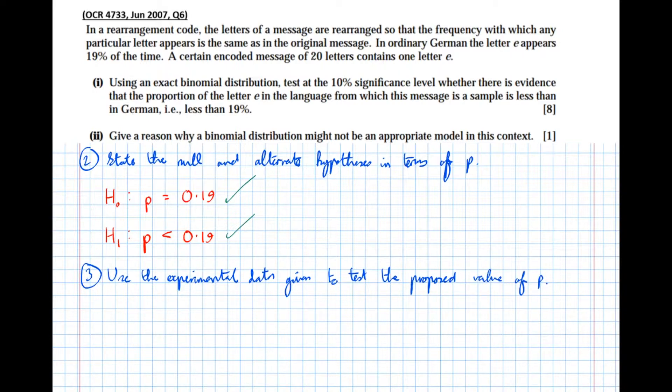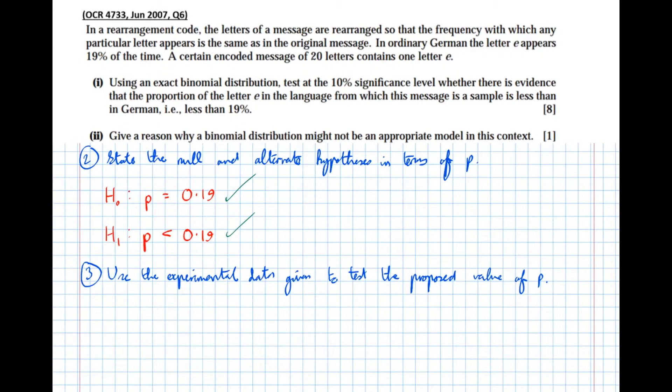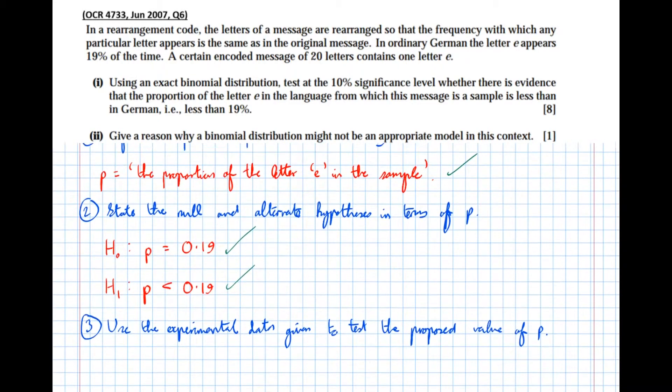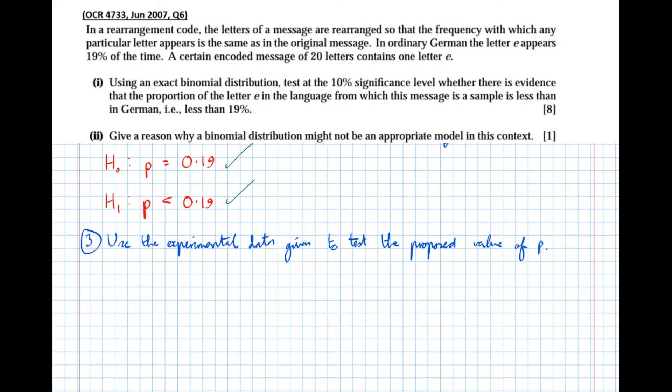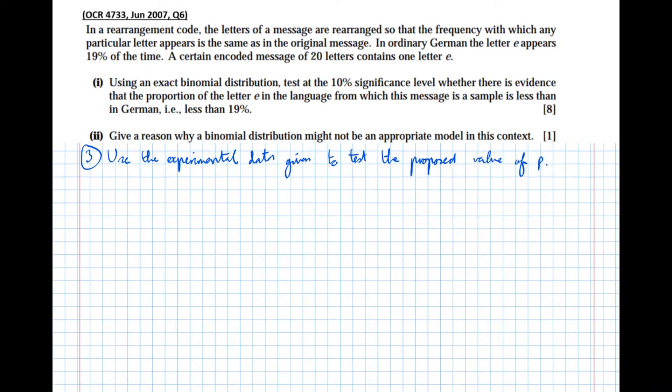So in this case we're told that p is 0.19 and we're trying to find evidence to suggest that it's less than 0.19. And before I continue I just want to point out that anything I've written in red is worth marks that would be my answer in an exam situation, anything in blue is simply instruction. So continuing with the question we need to use our experimental evidence to find out whether the frequency is less than 19 percent, we've assumed it's 19 percent now we're looking for evidence that it's less than 19 percent.